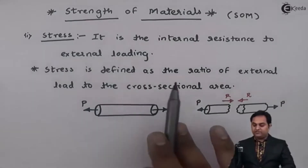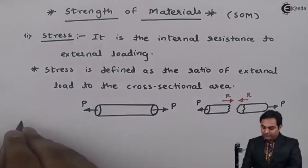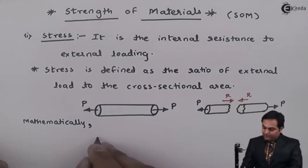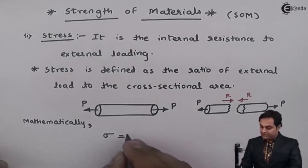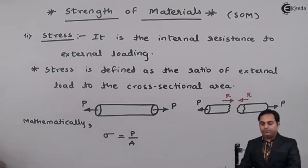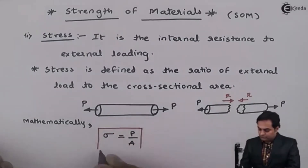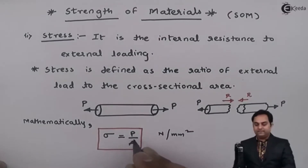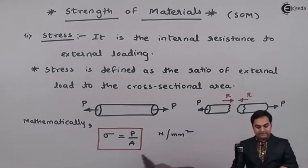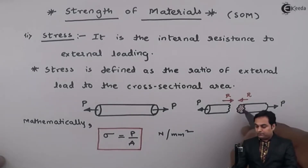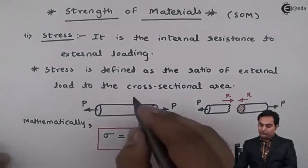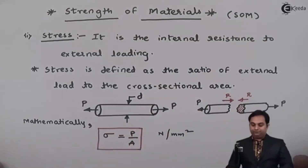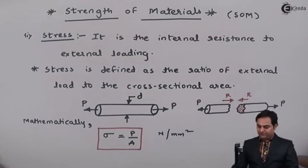Stress is the ratio of external load to cross-sectional area. Mathematically, stress is denoted by the letter sigma, and sigma is equal to P upon A, that is external load upon cross-sectional area. The unit of stress will be in terms of Newton per mm square, because load is in Newton and area is in mm square. This area is the cross-sectional area of the rod — assuming the rod is circular, the area would correspond to the diameter of the rod. So here we have seen what is meant by stress, its definition. Next I will write the various units of stress.